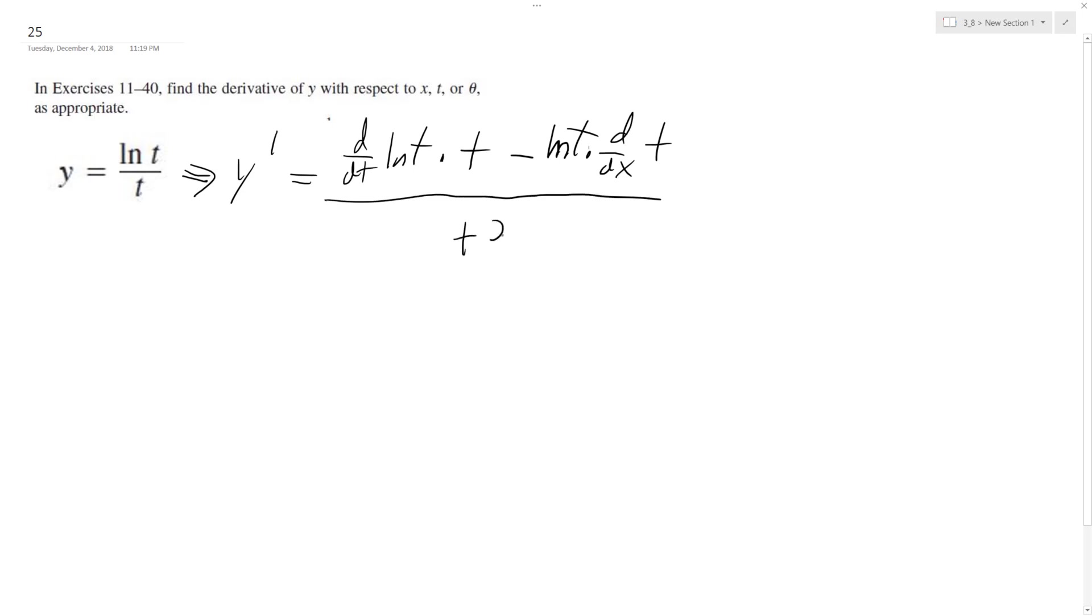And then over t squared. So what we end up with is 1 over t times t minus natural log of t times 1, all over t squared.